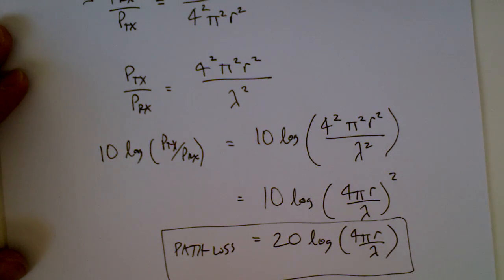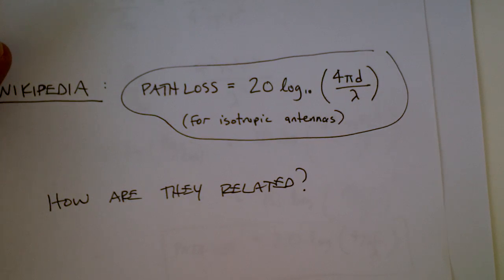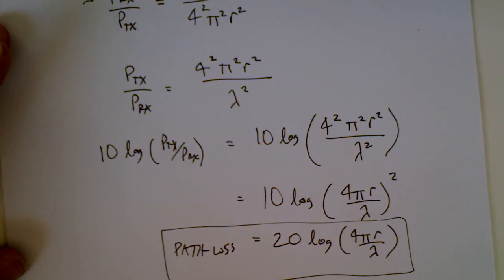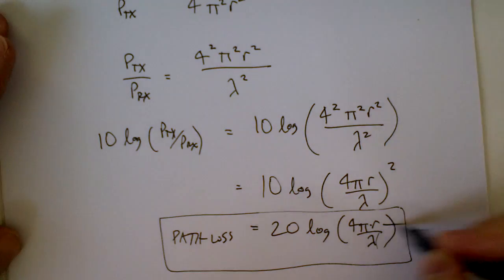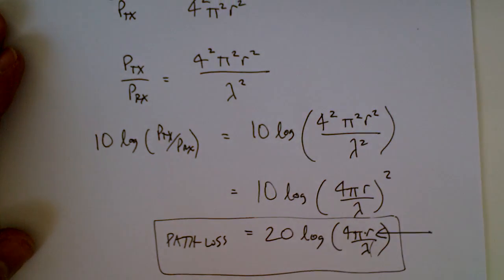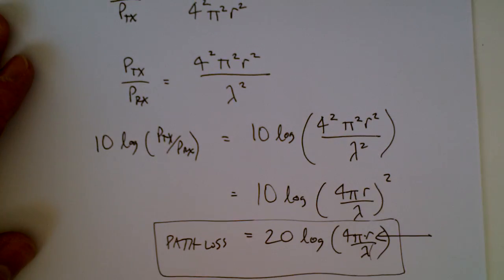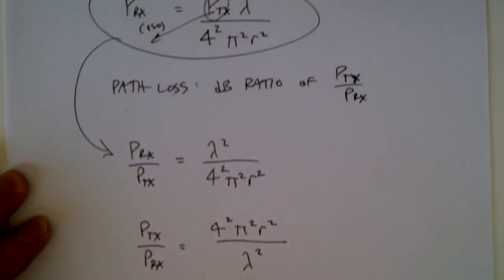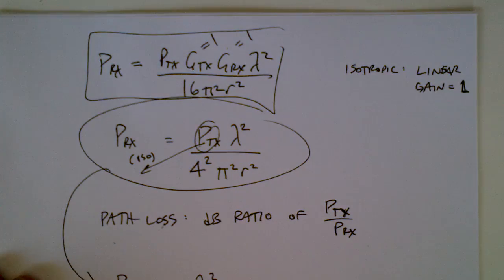So path loss is equal to this. And if we look back up at the Wikipedia definition, path loss is 20 log of 4 pi d over lambda. We have 20 log of 4 pi r over lambda. This is referring to the separation of antennas, and so is this. So we've just proven that path loss comes from this original power received formula.